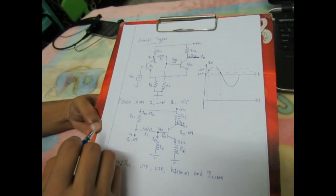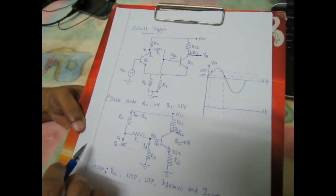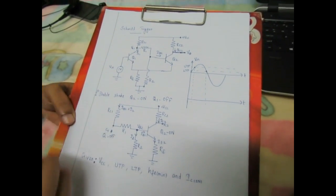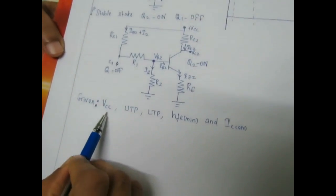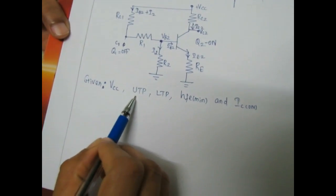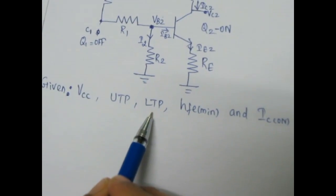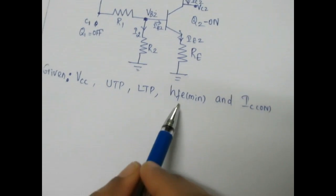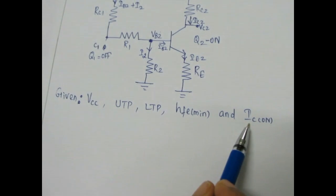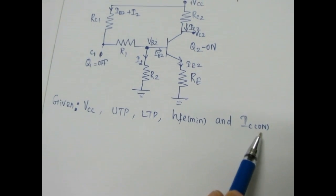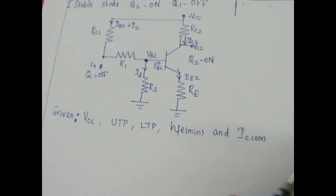In this video we will see how to design a Schmitt trigger circuit if VCC, upper threshold point, lower threshold point, gain of the transistor, and collector current of an on transistor is given.